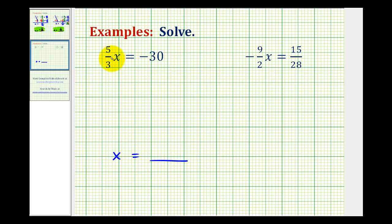For five-thirds x, the five-thirds and the x are connected by multiplication. So we want to undo this multiplication, which normally means we would divide both sides by five-thirds. But when dividing by a fraction, we normally multiply by the reciprocal.